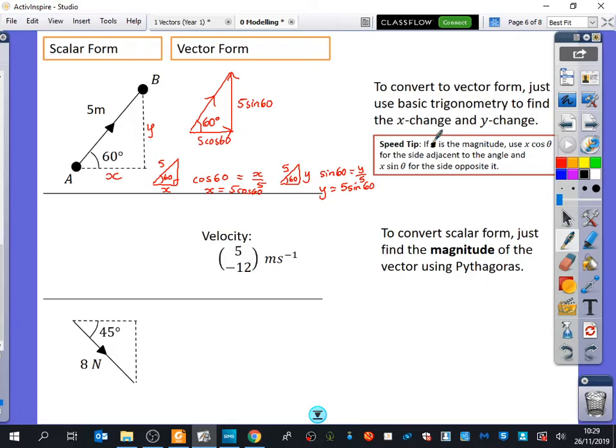So actually, maybe if we say that, what letter should we use for magnitude? If I say that if F is the magnitude, you would use F cos theta for the side adjacent, and you would use F sine theta for the side opposite. I just think X was a bit confusing because X is going to sound like we're talking about something in the X direction.